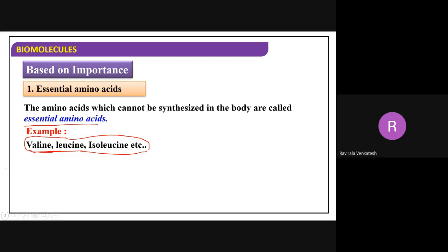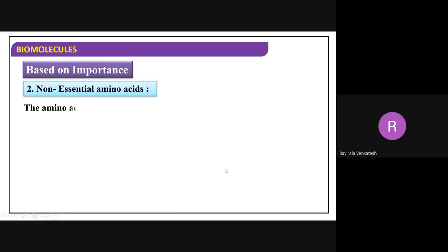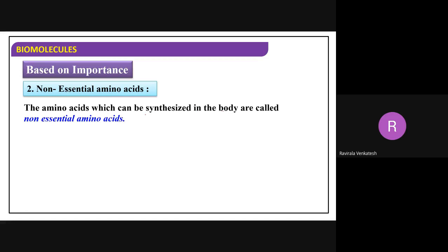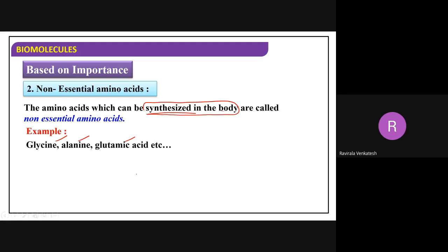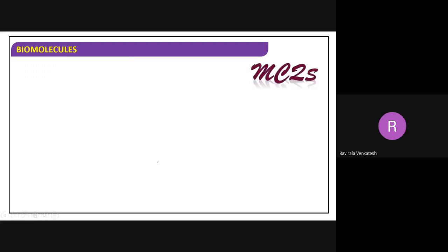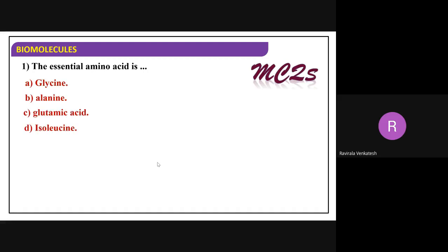In your textbook, wherever a star mark is given, that indicates essential amino acids. Non-essential amino acids are those that can be synthesized in the body, so there is no need to take them in food. Examples: glycine, alanine, glutamic acid. The non-starred ones in the textbook come under non-essential amino acids. I will give a shortcut later for how to remember the essential amino acids.